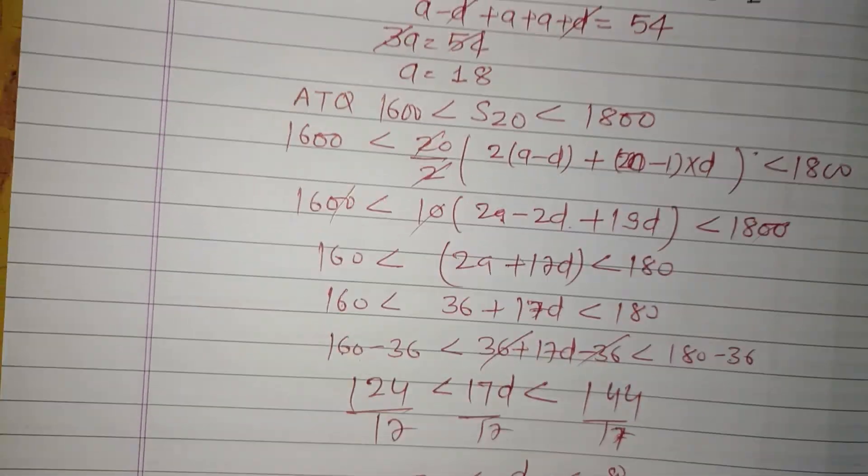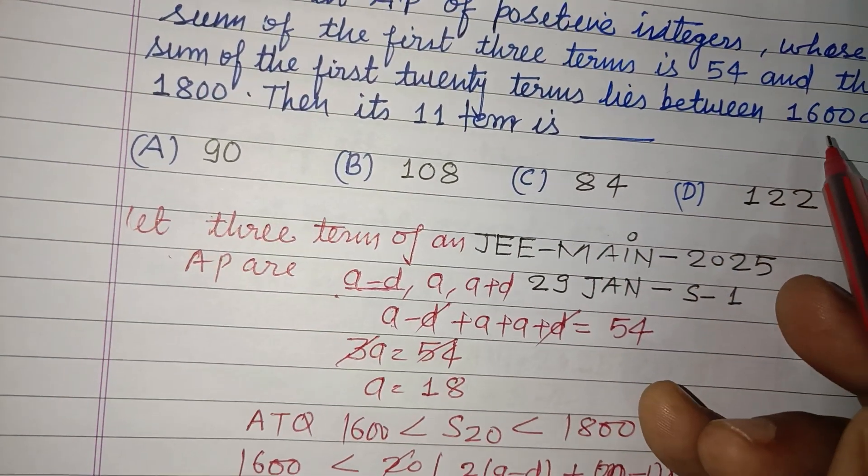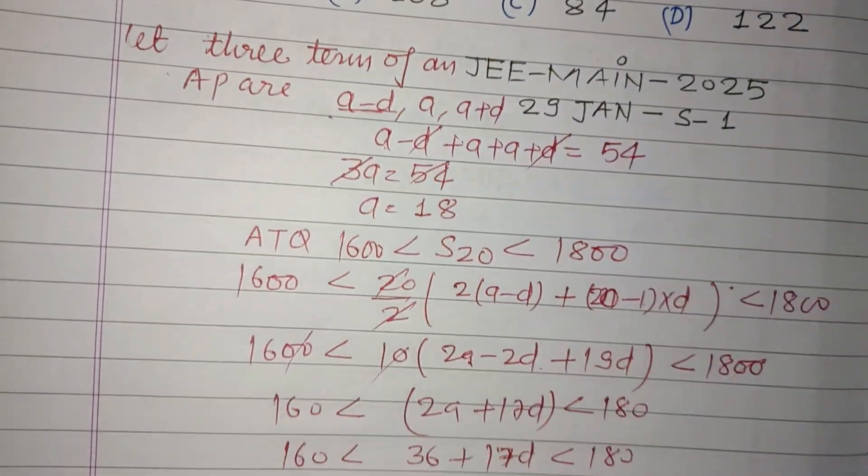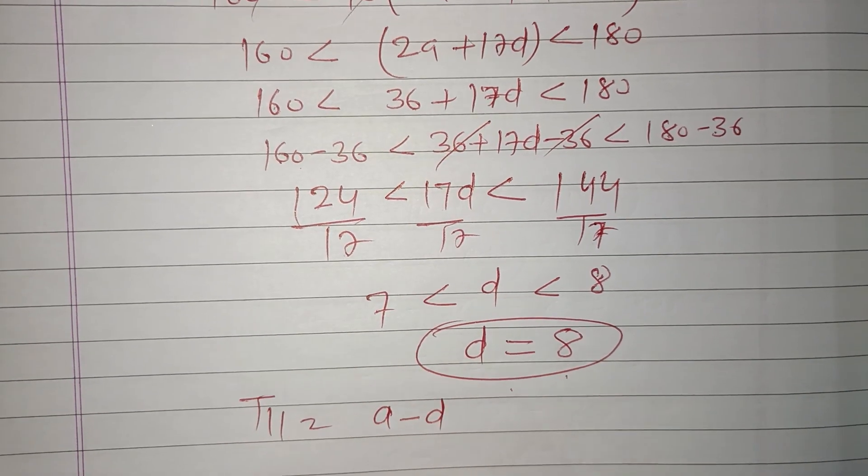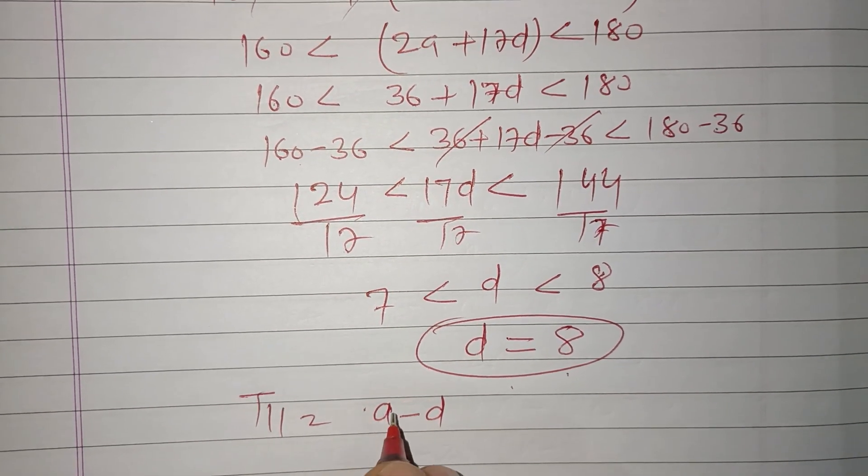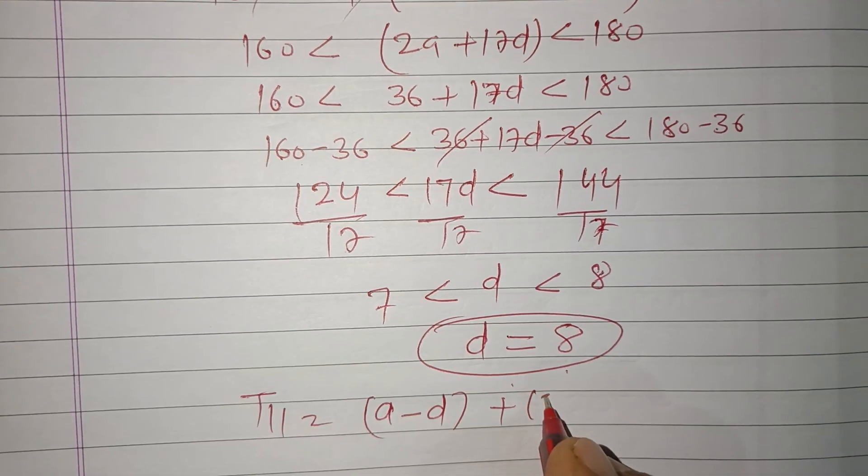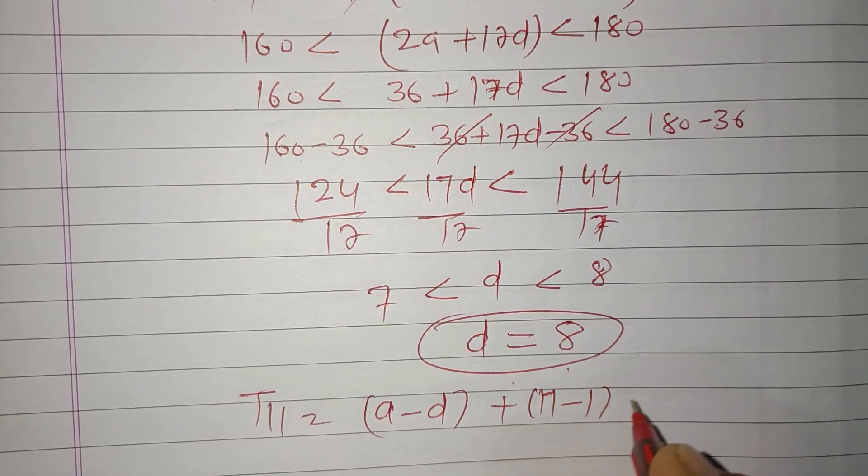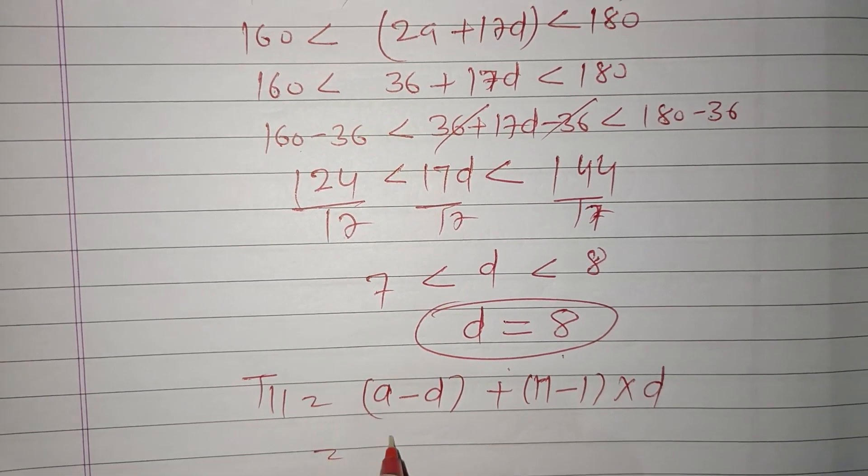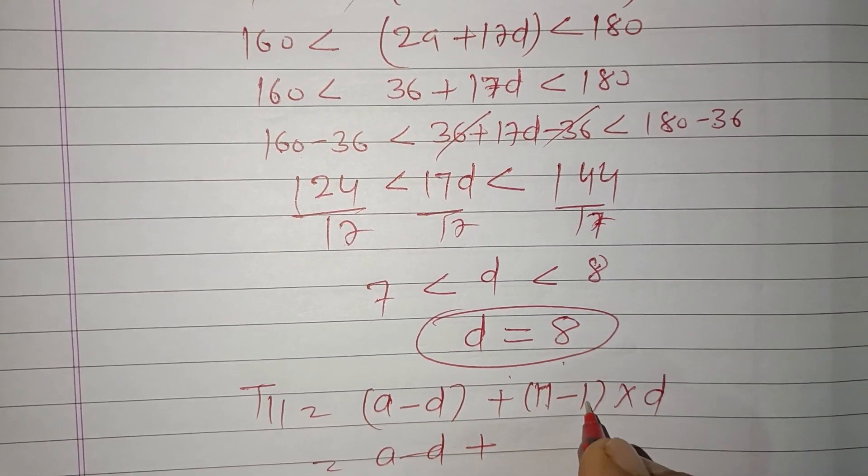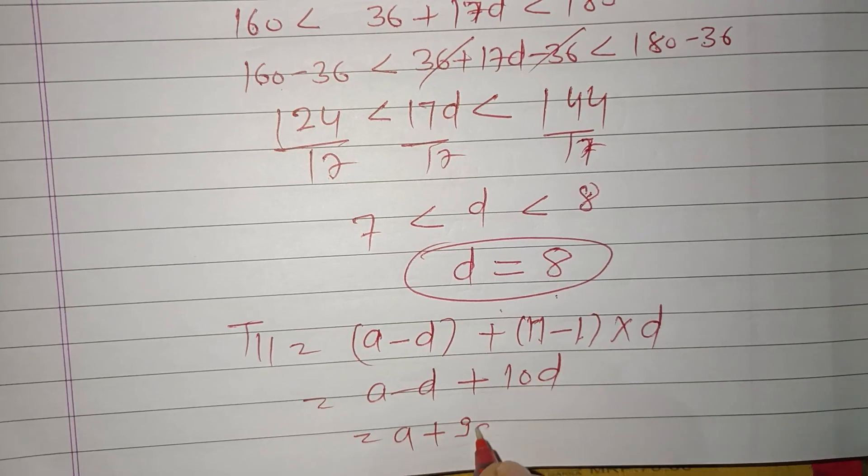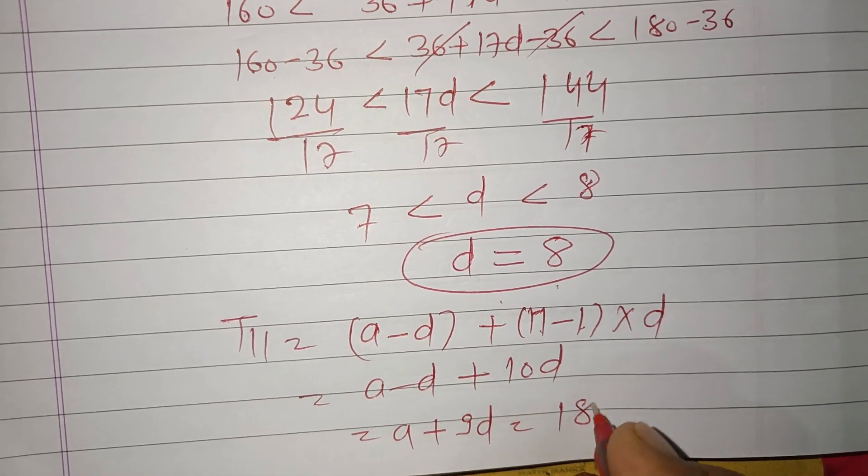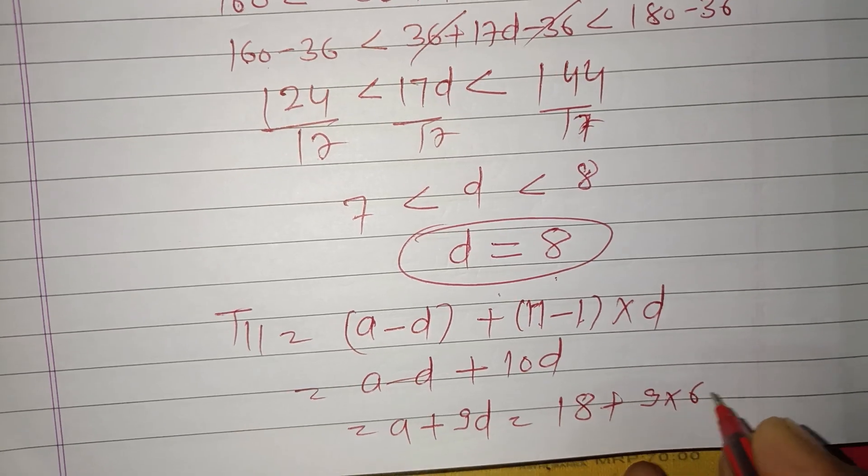Now question is saying find its 11th term. Therefore T11 equals A, here is A, A minus D plus N minus 1 into D. So A minus D plus 11 minus 1, this is 10D. Therefore A plus 9D. And A is what? 18 plus 9 into D.